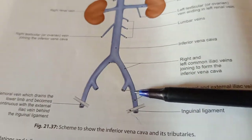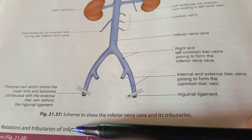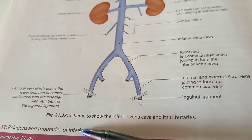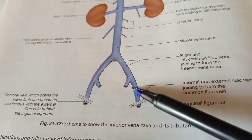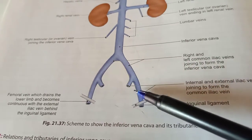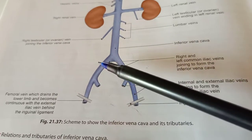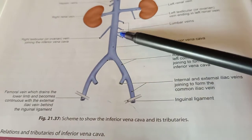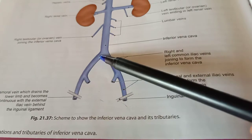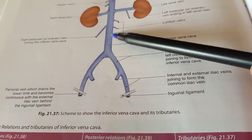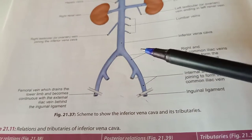Again, to repeat how the IVC is formed — this could be an important MCQ or VIVA question. The femoral vein crosses the inguinal ligament and continues as the external iliac vein. The external iliac vein together with the internal iliac vein of both sides forms the right and left common iliac veins. These right and left common iliac veins unite to form the IVC.